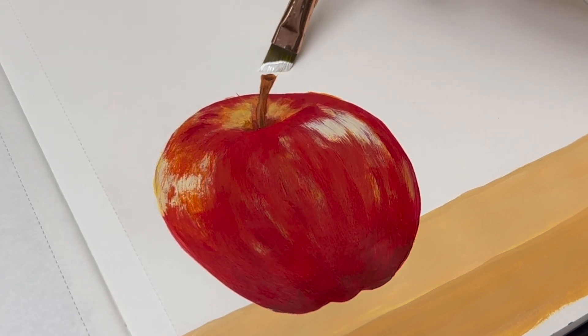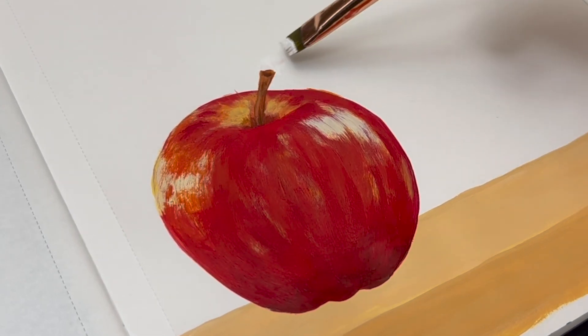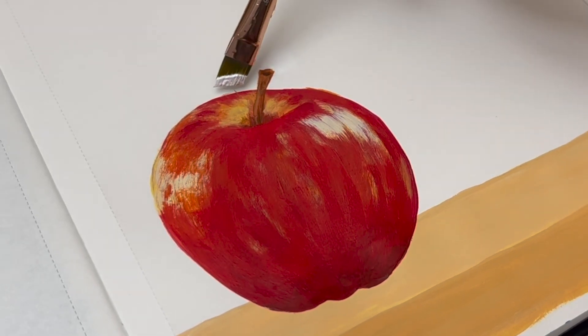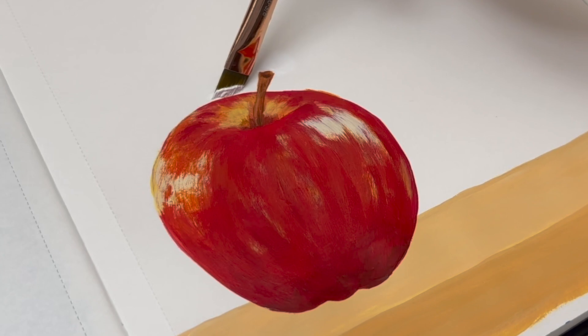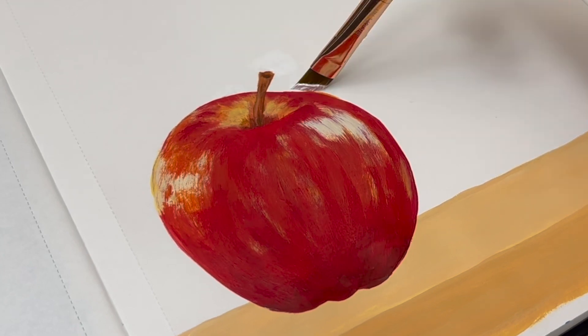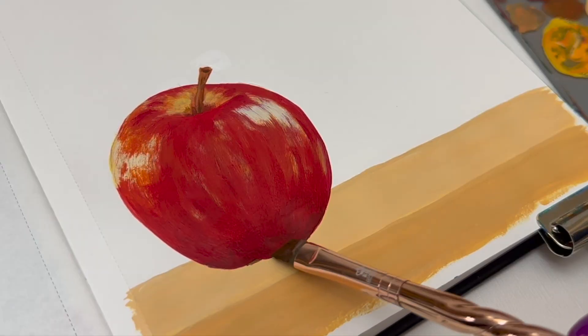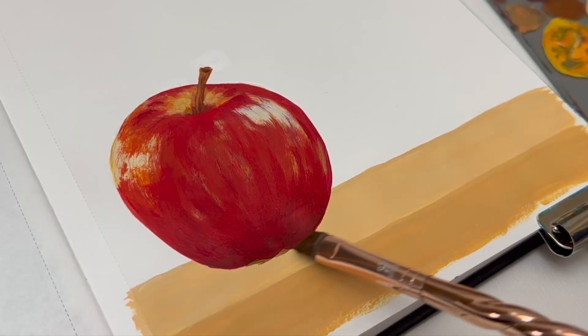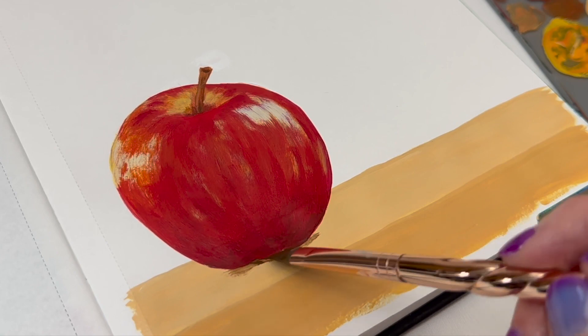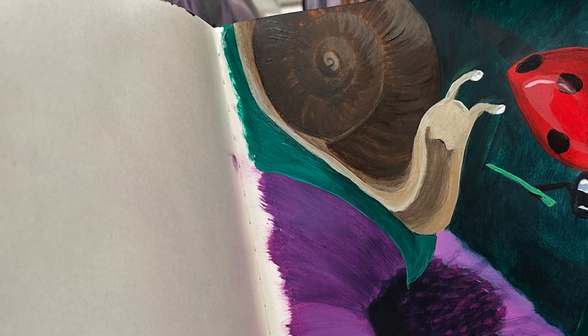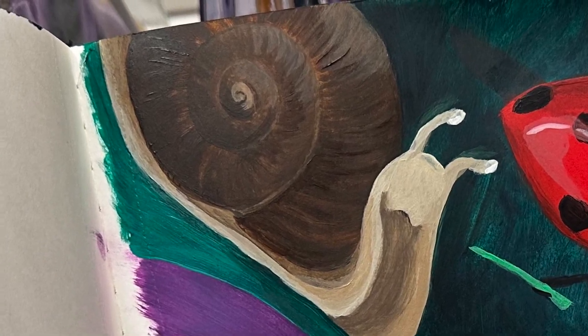It's something that seems like, of course you should paint that way, but I never really thought about painting in the direction that something curves until I started painting round objects while I was practicing. A few videos ago I painted a ladybug, and the wings or the shells that cover up the wings are very round. I also painted a snail and a snail shell is very round and has several layers of roundness.